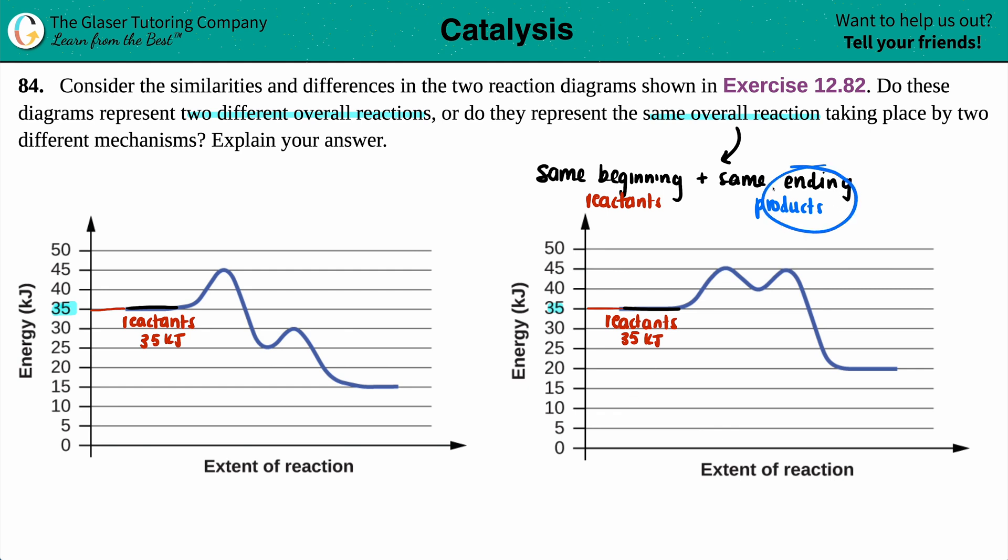Now let's zoom over to the ending, the products. If it's the same reaction, they should have the same products. And that is the horizontal line at the end. These are your products, and this is your products.